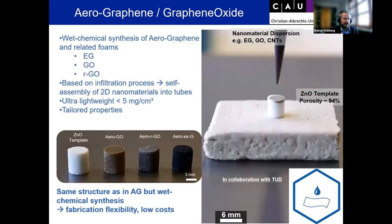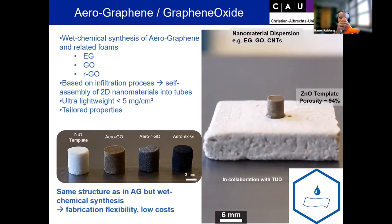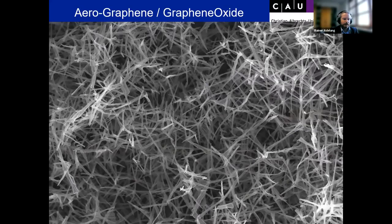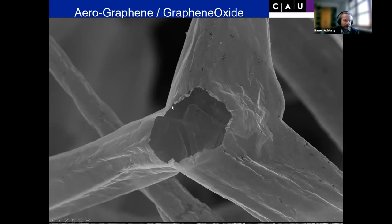Another way without CVD to put nanomaterials into these templates and removing them is a wet chemical approach. In the graphene flagship, as illustrated in this movie, you can drop in some graphene suspensions, which are soaked up by this zinc oxide network. The graphene nicely folds around the individual tetrapods. If you etch away the tetrapods at the end, you end up with a network of hollow graphene tetrapods, where the arm diameter is something like two to three nanometers with very nanoscopic wall thickness.